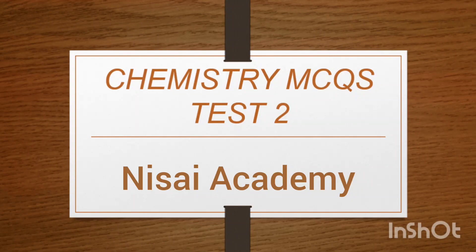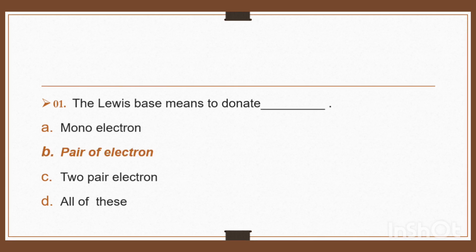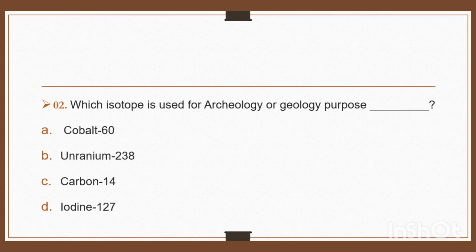Question 1: The Lewis base means to donate — option A: mono electron, option B: pair of electron, option C: two pair of electron, option D: all of these. The Lewis base means to donate a pair of electrons. Right, option B: pair of electron.